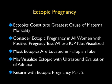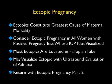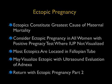In conclusion, ectopic pregnancies constitute the greatest cause overall of maternal mortality, and we must consider an ectopic pregnancy in all women with a positive pregnancy test where an intrauterine pregnancy is not visualized within the fundal part of the uterus. Most ectopic pregnancies are going to be located in the fallopian tube and we may actually visualize the ectopic with ultrasound evaluation of the adnexa, as shown in this module. We'll return with ectopic pregnancy part two, which goes over the varied manifestations of ectopics.